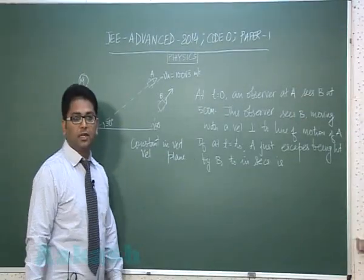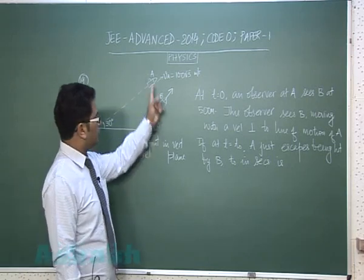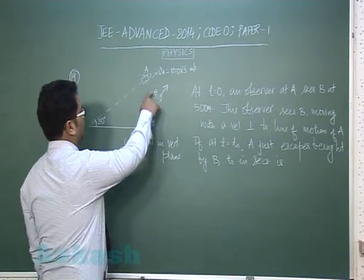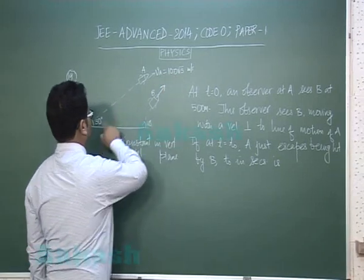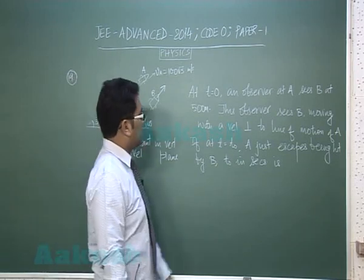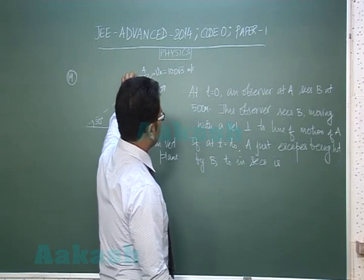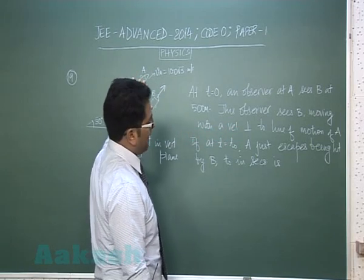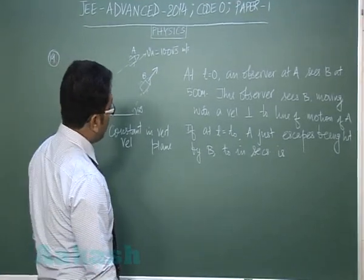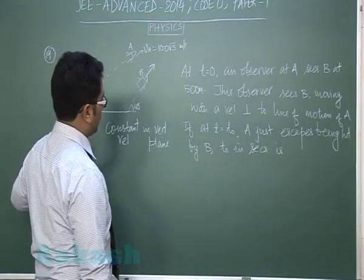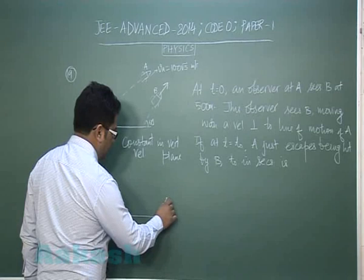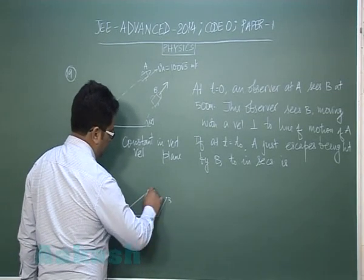Question number 19 is from kinematics. These are two aeroplanes moving with a constant velocity in vertical plane. Velocity of A is given in terms of magnitude and direction, and velocity of B is given only in terms of direction. At t equals 0 an observer at A sees B at 500 meter and additionally the observer also sees B moving with a velocity perpendicular to the line of motion of A. That means the whole concept is relative motion of B with respect to A.